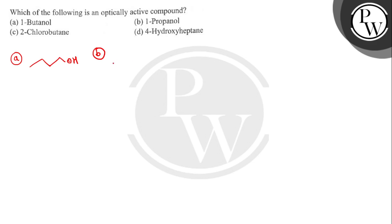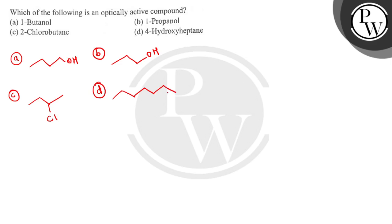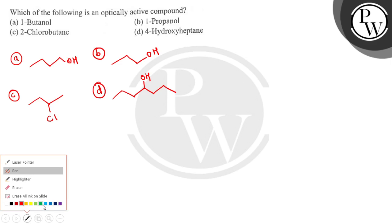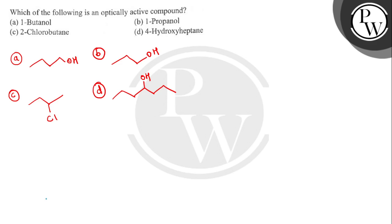Option B is 1-propanol — this is the structure of 1-propanol. Option C is 2-chlorobutane. And option D is 4-hydroxy heptane. We need to determine which compound is optically active.